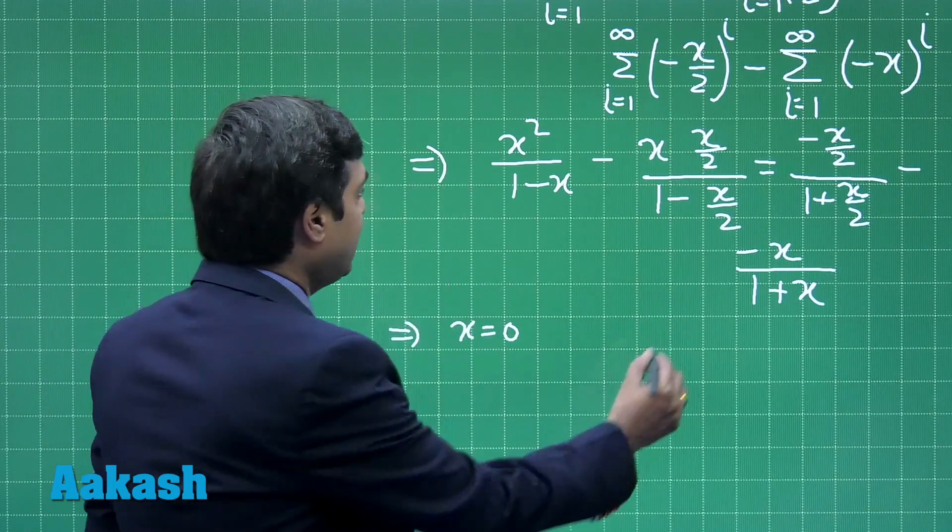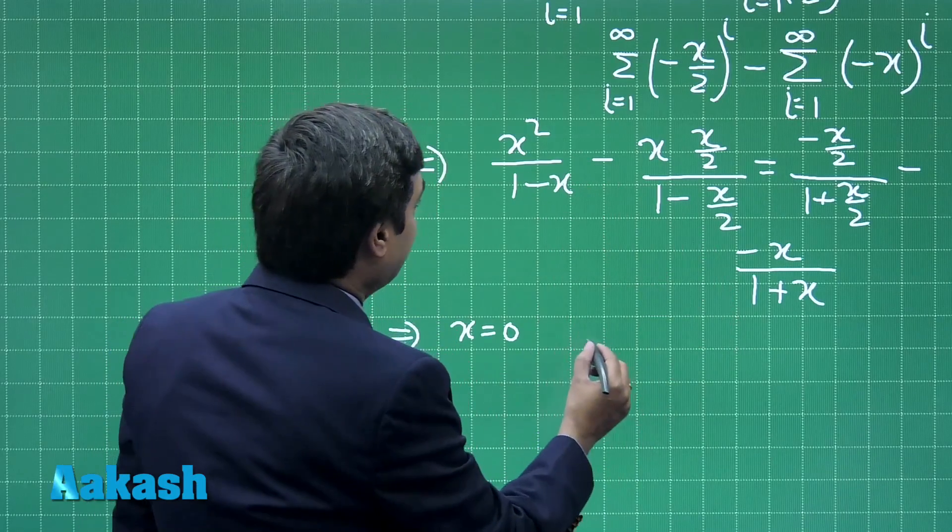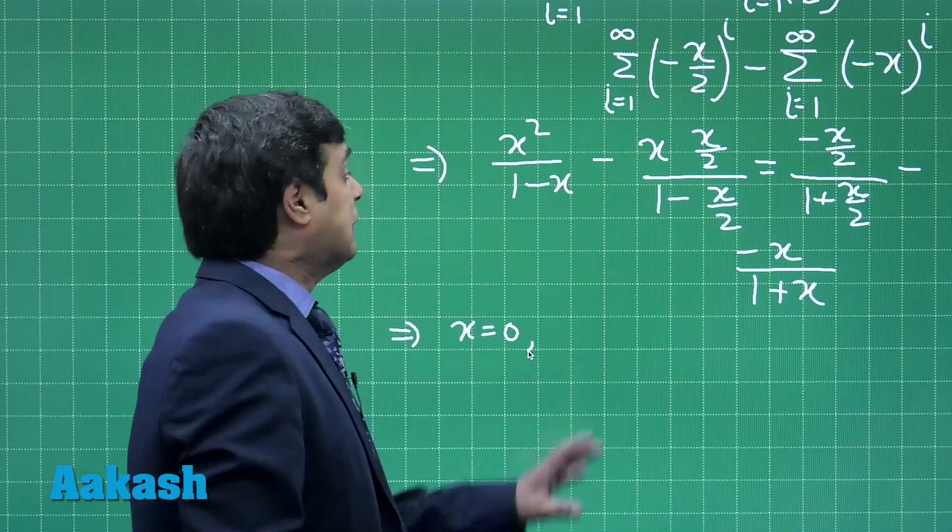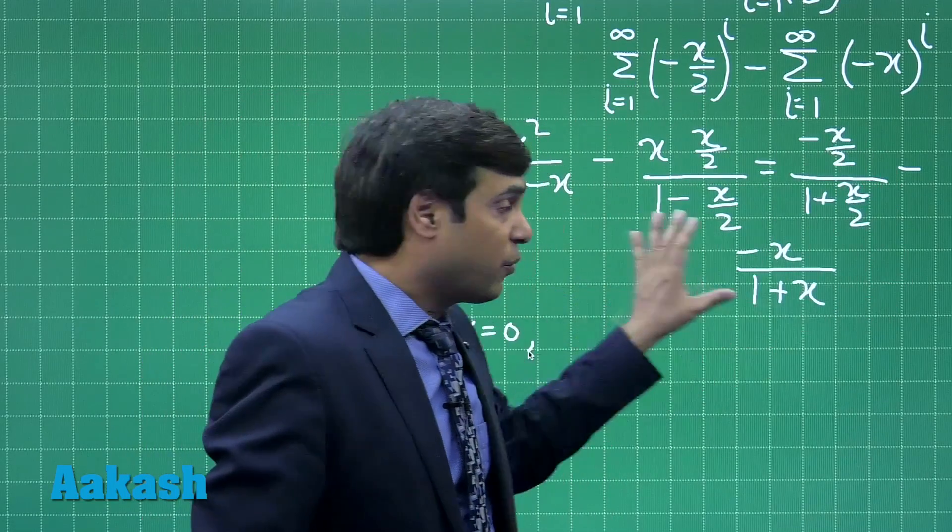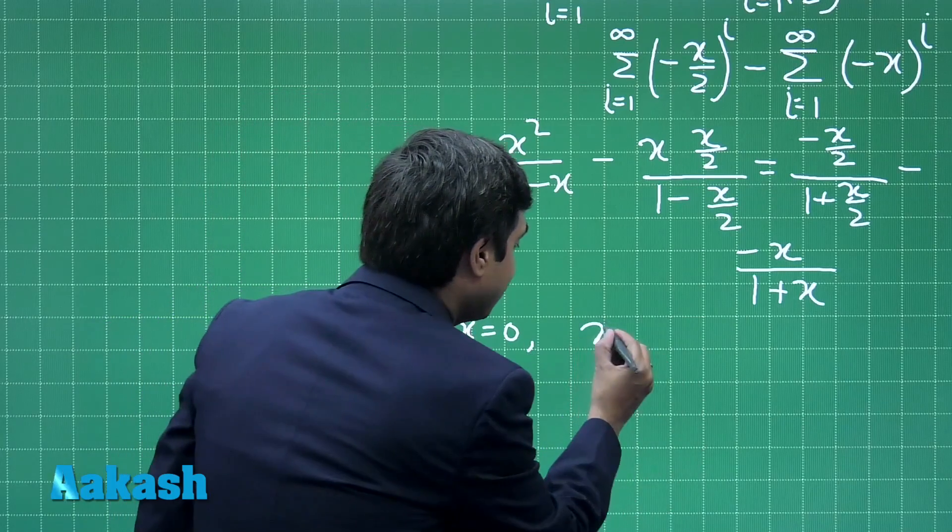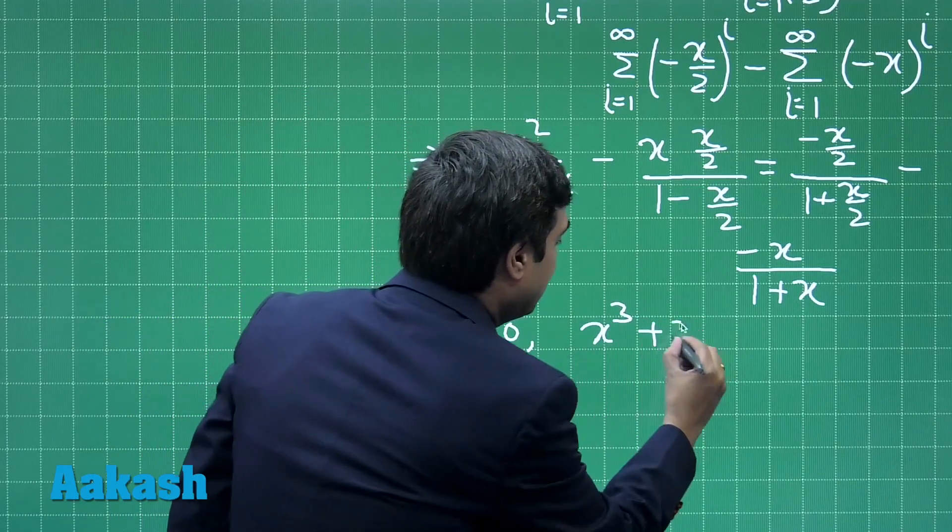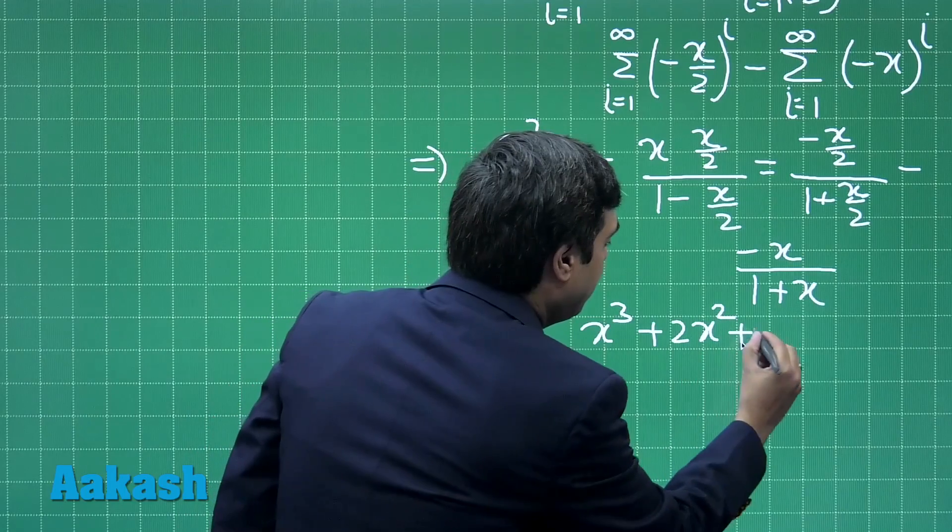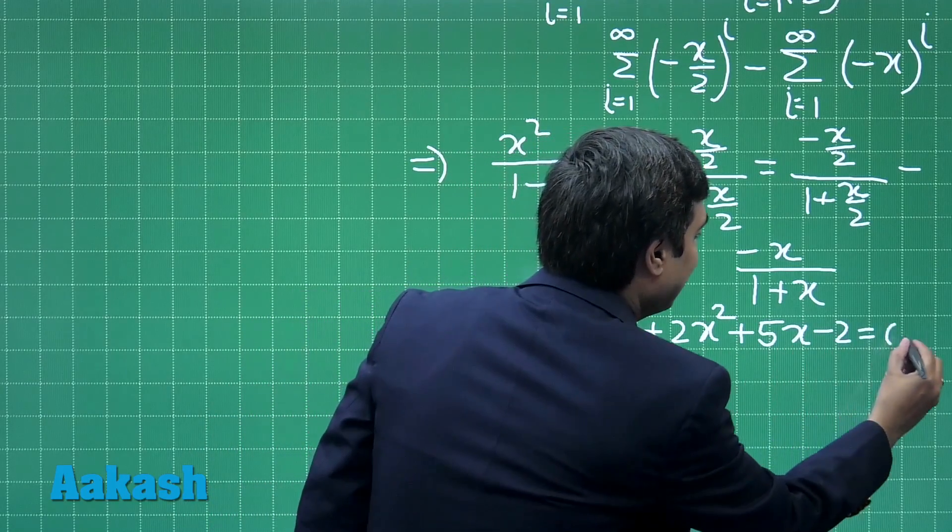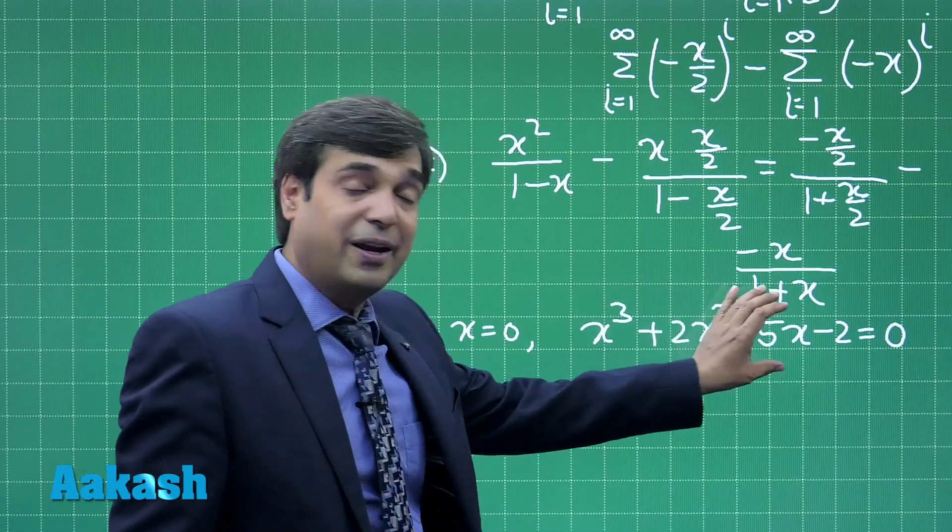Rest, we can see here on taking LCM it gives us, so after taking this one root common which is x equals 0, we can see the remaining equation converts in term of cubic which can be written as x cube plus 2 x square plus 5 x minus 2 is equal to 0.